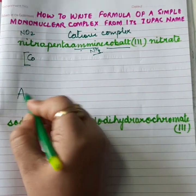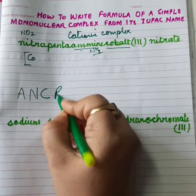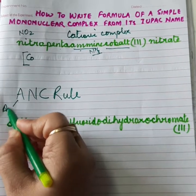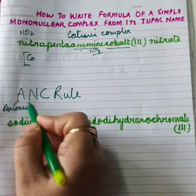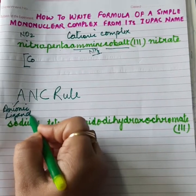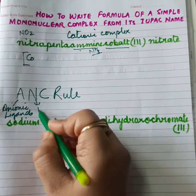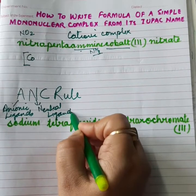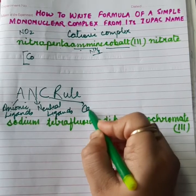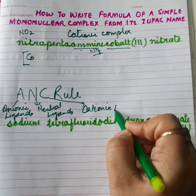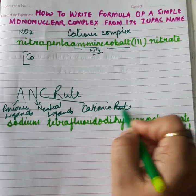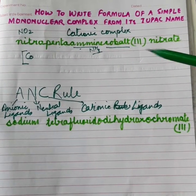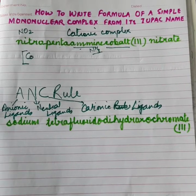The rule is called as ANC rule. What is this ANC rule? We report anionic ligands first, then we report neutral ligands, and then we report cationic ligands. This is very important rule when we write particular formula of a complex. So, we will follow this ANC rule here.